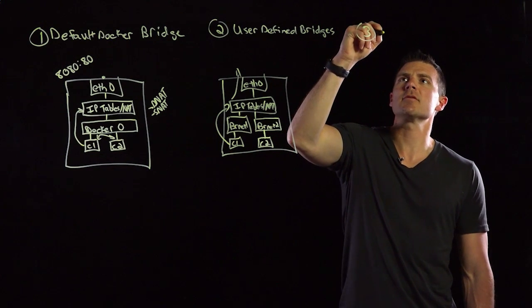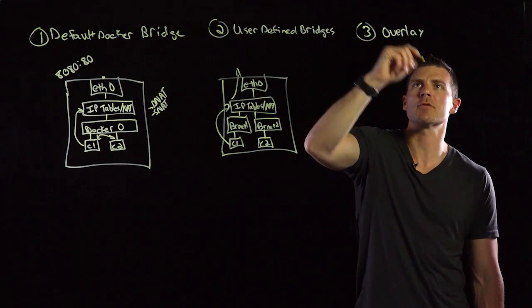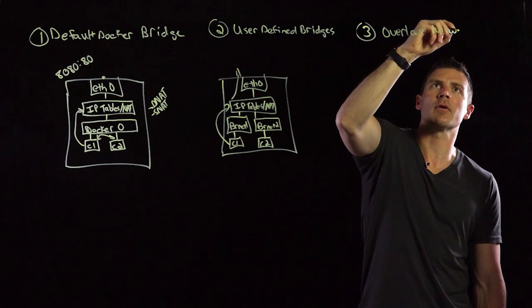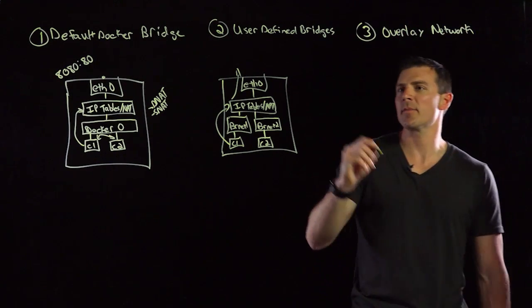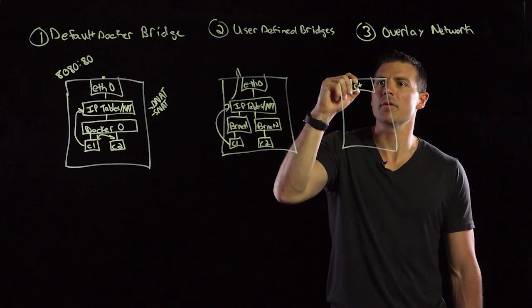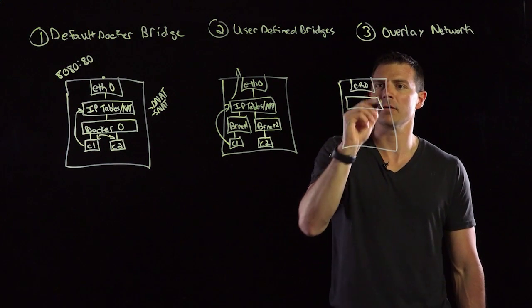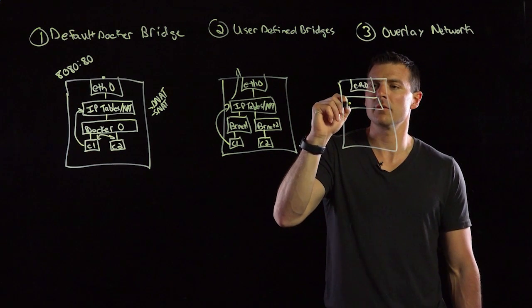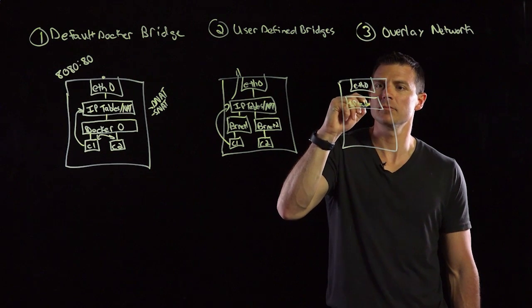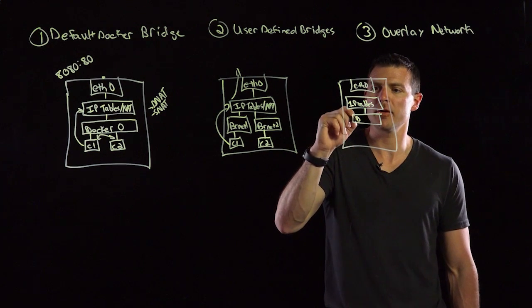The next method is to use overlay networking. This has become default in Docker as well. And so when we have an overlay network, what happens here is this time I'm going to draw two hosts with the eth0. And then we'll also draw our IP tables and our bridge.